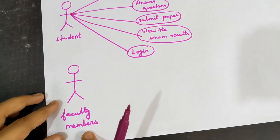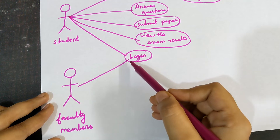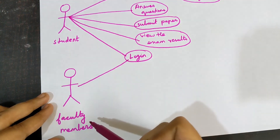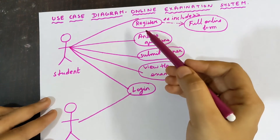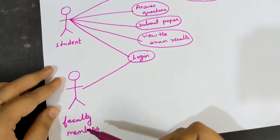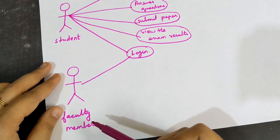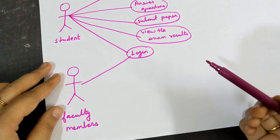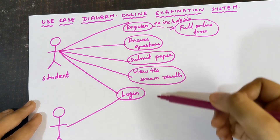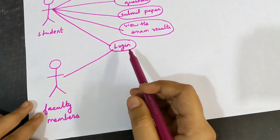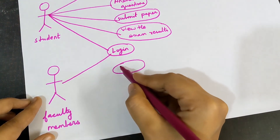Now for the actor Faculty Member — they also need to log in first. Login is common to both student and faculty member. However, the registration process differs: faculty members already have direct access set up by the college and do not need to register themselves. Students must each register individually. After logging in, the faculty member can perform their operations.